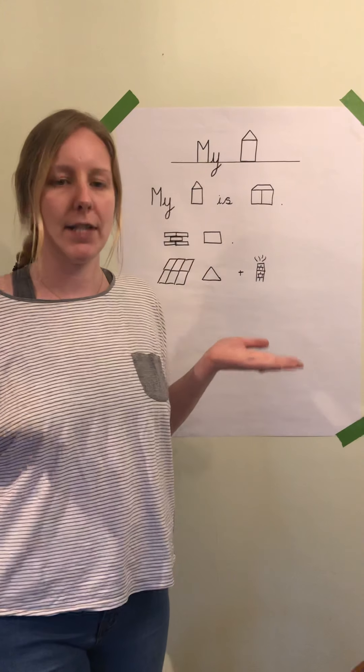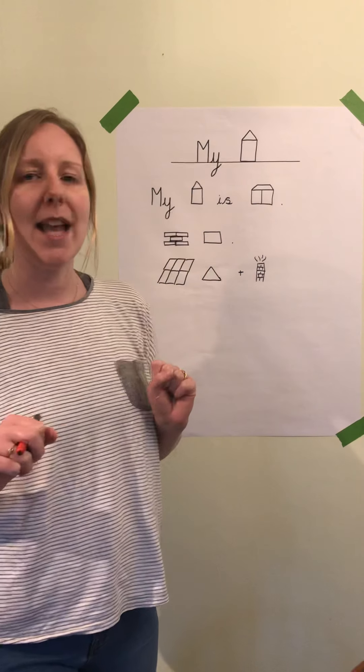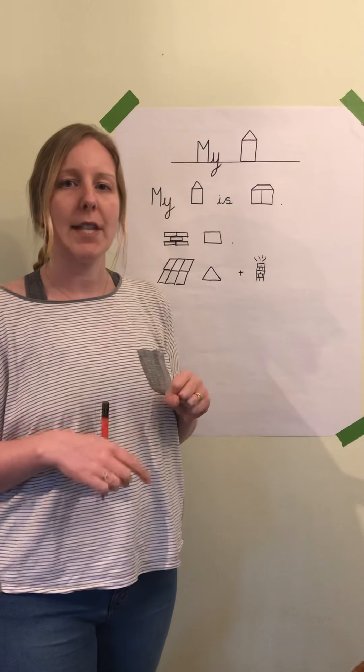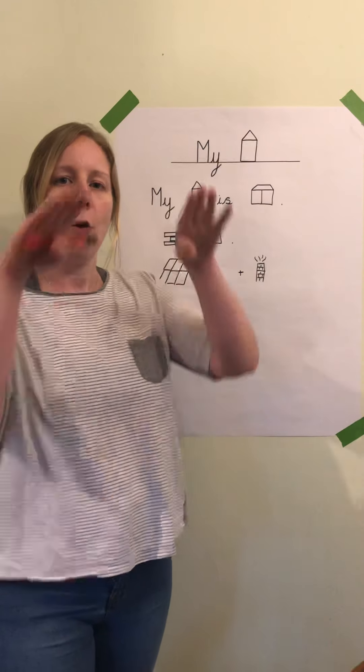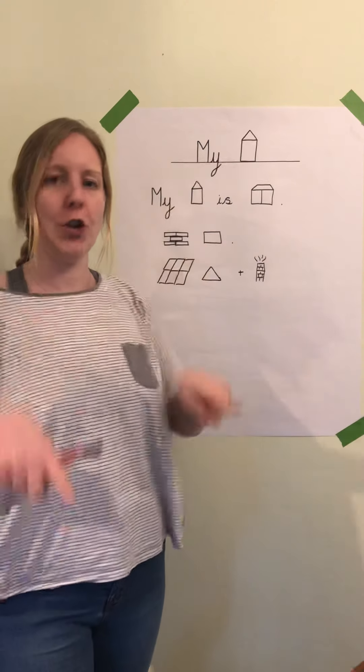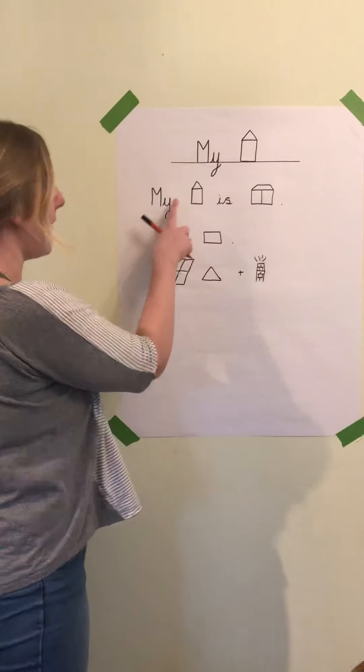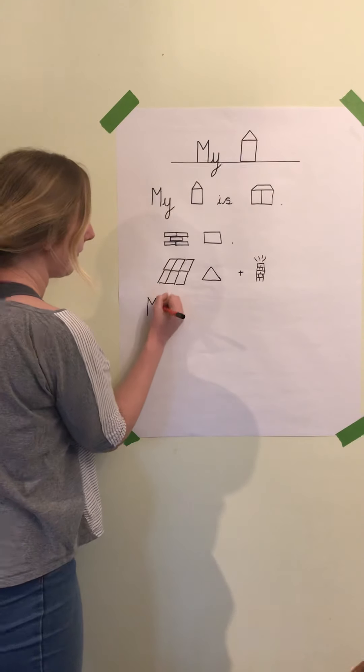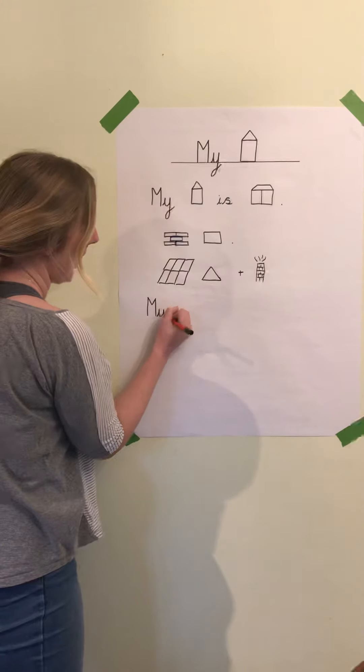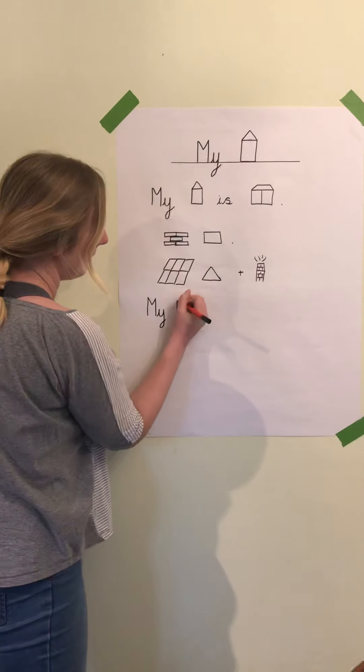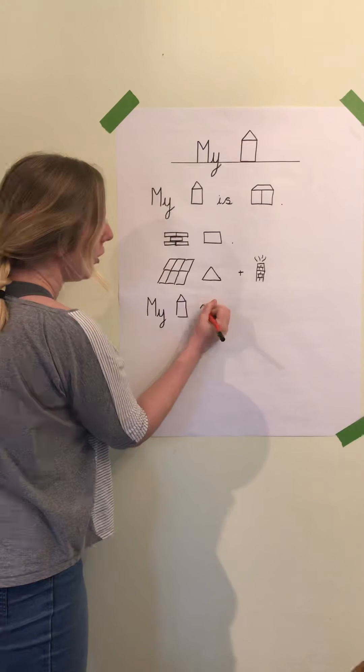And my last sentence is going to be 'my house has two windows and one door,' so I'm going to start with 'my house' again. My house has two...